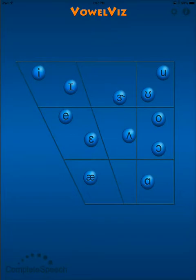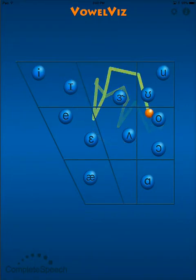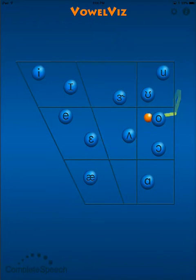Hi, this is Tanner with Complete Speech. In a previous video, we saw how VowelViz displays the transition in phonemic diphthongs I, OY, and OW. Today I want to look at two more diphthongs, O and A.